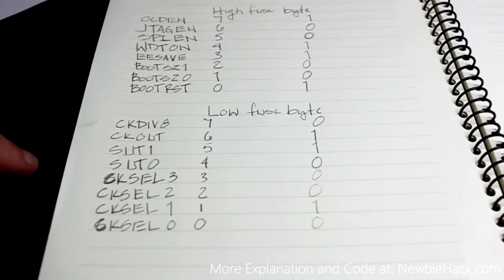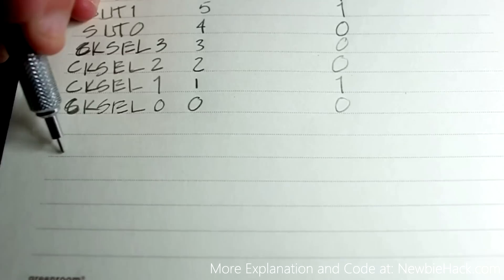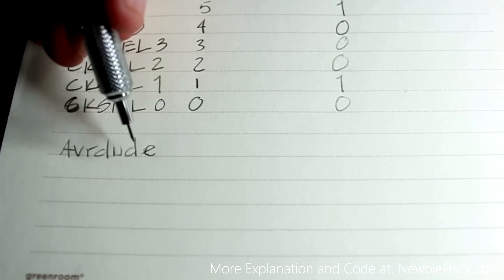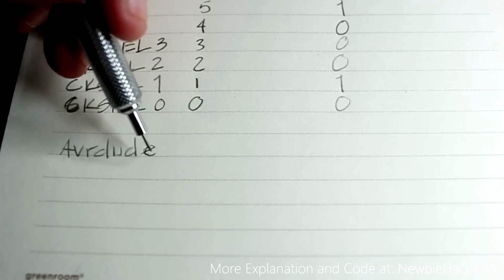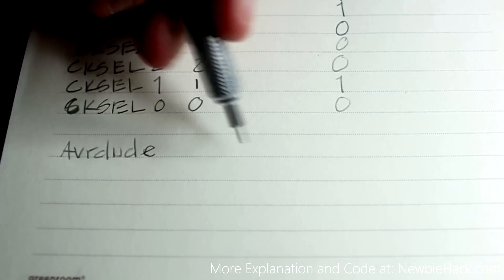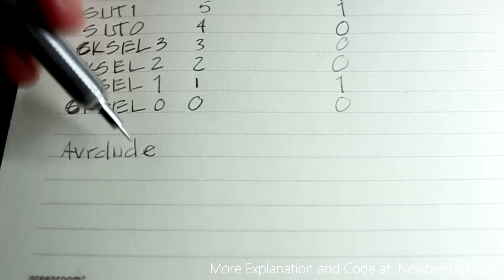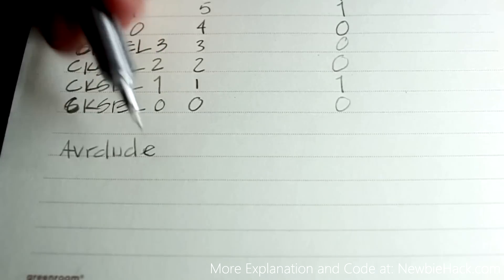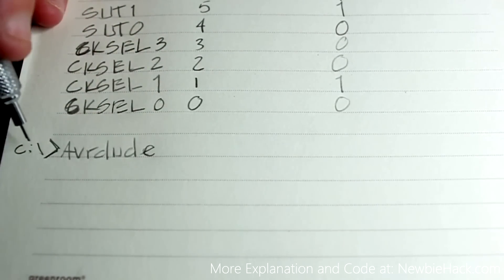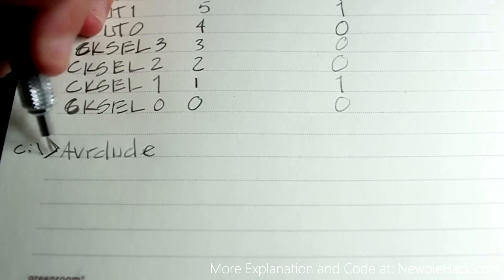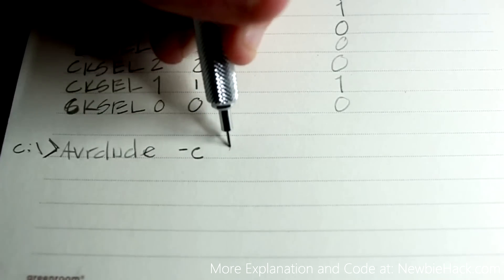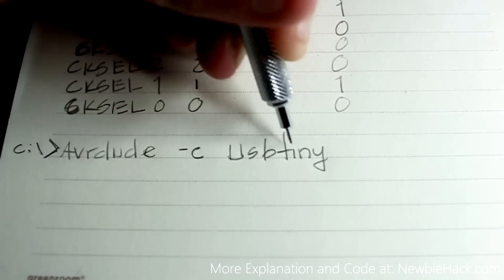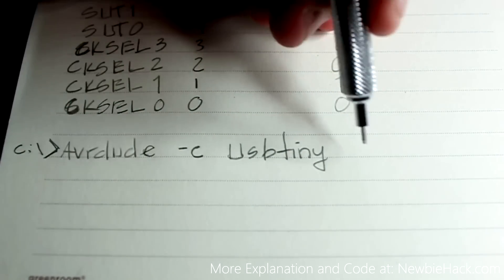Now we have a good general understanding of the fuse bits. How do we actually set these fuse bits on the microcontroller? Well, we can use AVRDUDE to do this. AVRDUDE is the program used to program the microcontroller — it establishes the communication and gets your hex file into the microcontroller. We're going to be using AVRDUDE to set the fuse bits. You start by writing AVRDUDE at the command prompt, and then you have to specify what programmer you're using — that would be the USBtiny in this case, or you can replace it with your particular programmer.